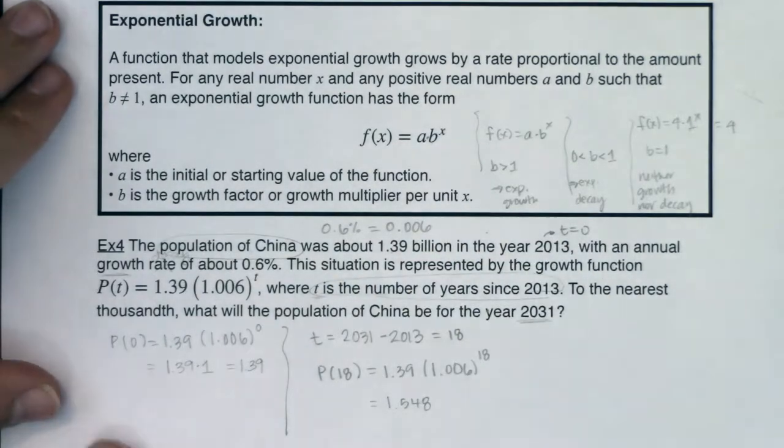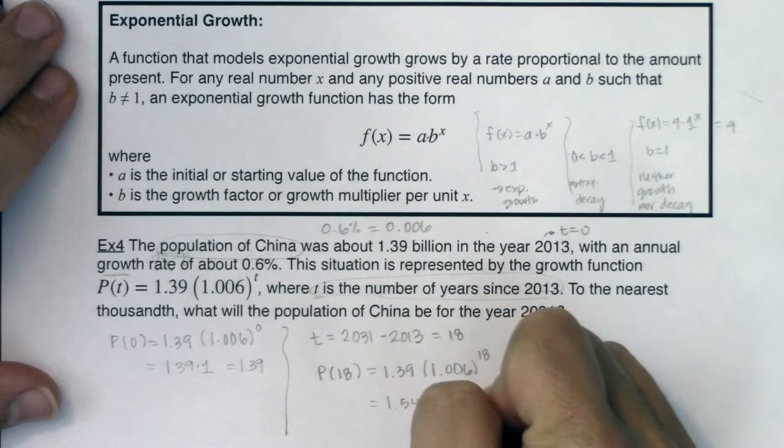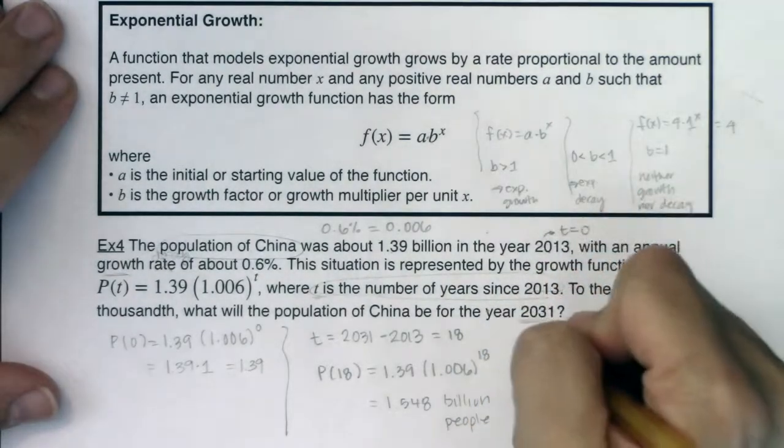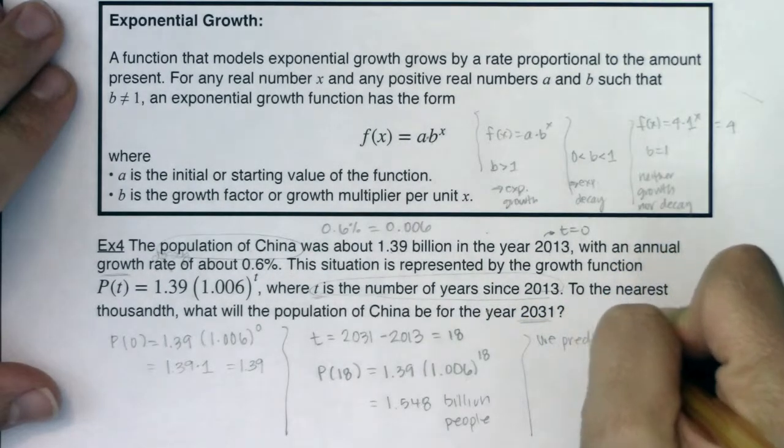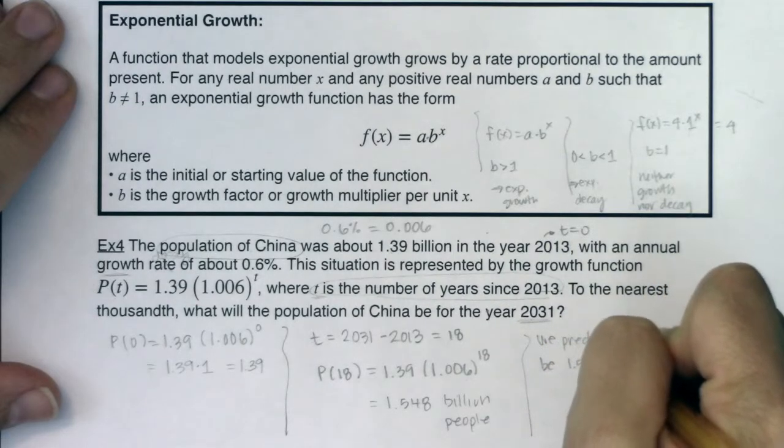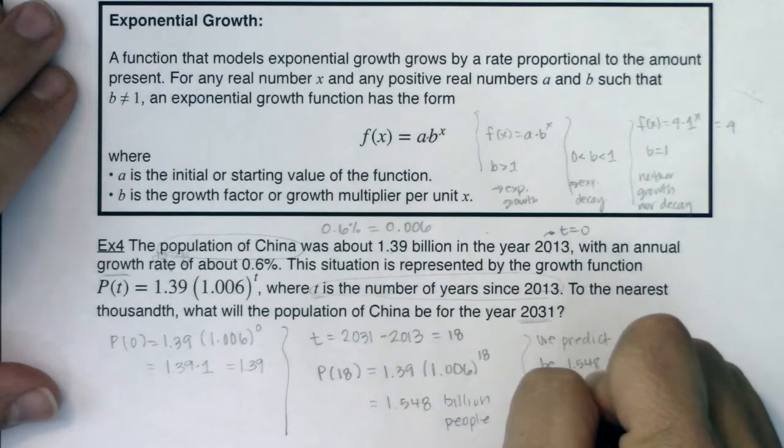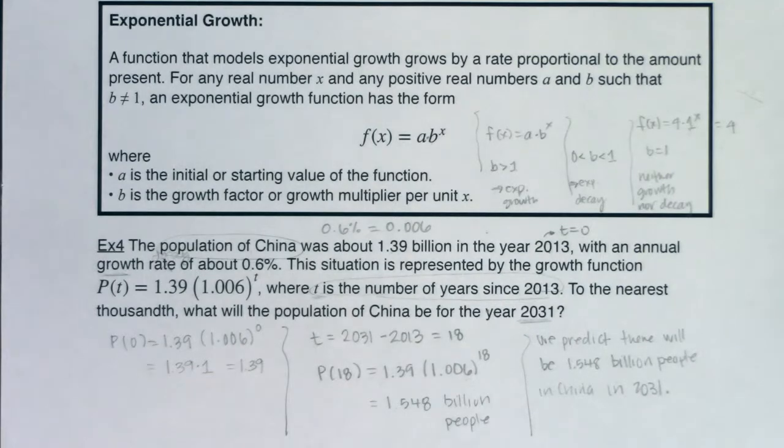But of course, it is a word problem. So you owe me some units. So we can see that this represents billions of people. This is billion people. So there's my answer. Of course, being the math teacher, I'm going to write this up as a sentence. So we predict there will be, let me write, there will be 1.548 billion people in China in 2031. That's my guess. We can hang out, wait around until 2031, see how close I was. Maybe I'm right on the money. Maybe I'm way off. I don't know how sustainable this model is. But this is the info I have right now.